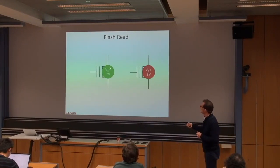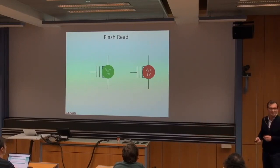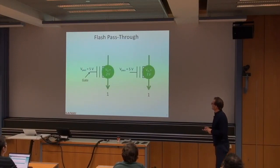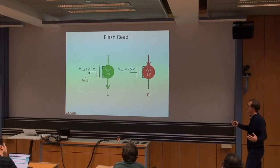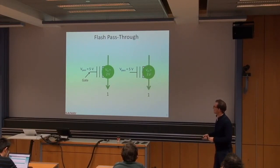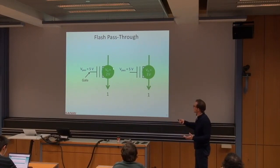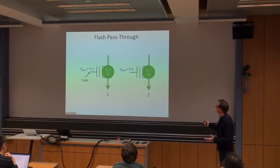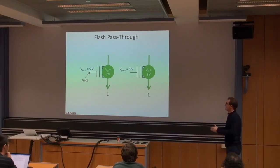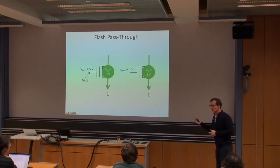For pass-through: if you don't want to read a particular row, you apply a voltage that is high enough — higher than any value any cell is programmed to — so that cell always turns on and passes through whatever is coming from the bit line. That's the pass-through voltage, and that's how you ensure non-target rows don't interfere with reading.